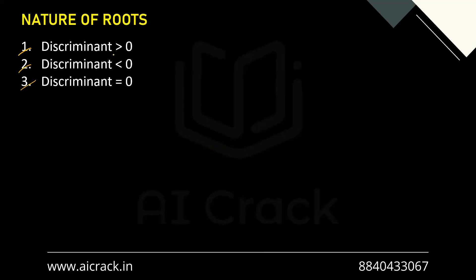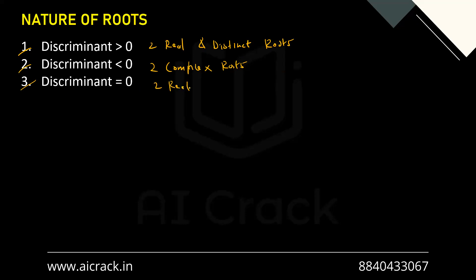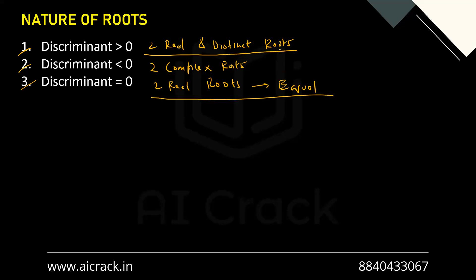Now let's talk about nature of roots. There are three cases: D > 0 gives two real and distinct roots; D < 0 gives two complex roots; D = 0 gives two real and equal roots. In the first and third cases we have real roots, and in the second case we have complex roots.